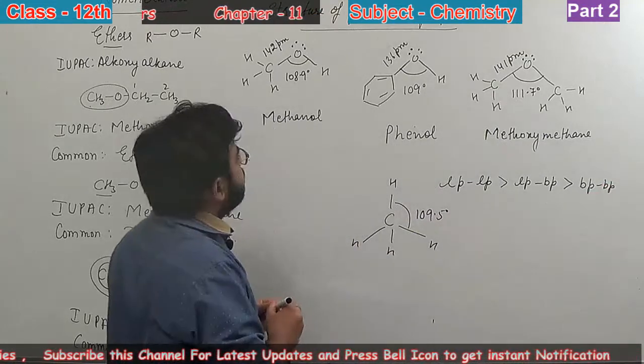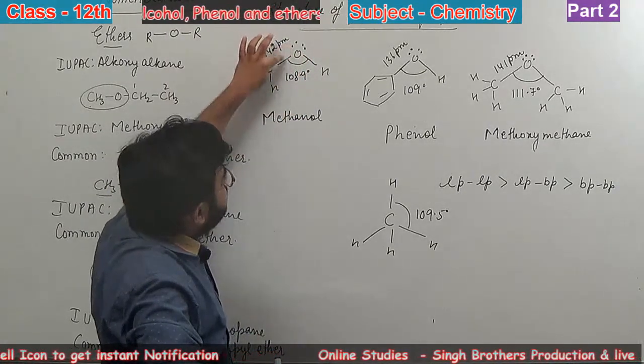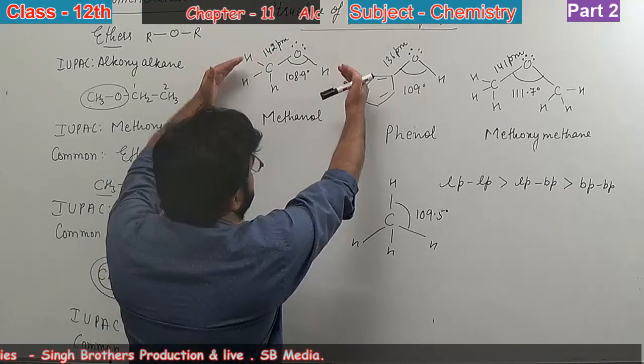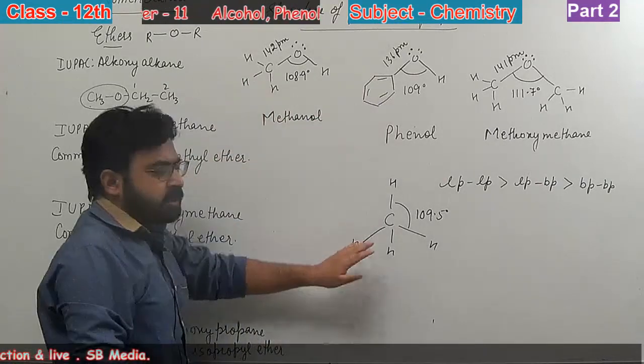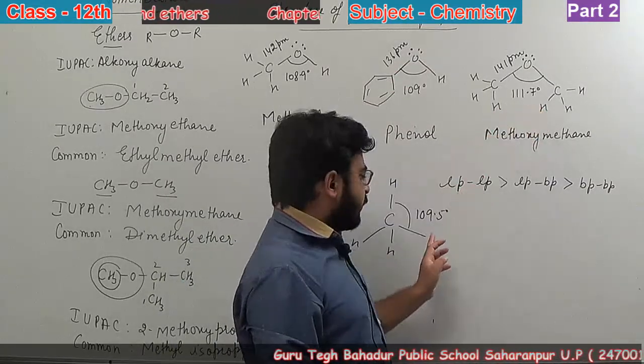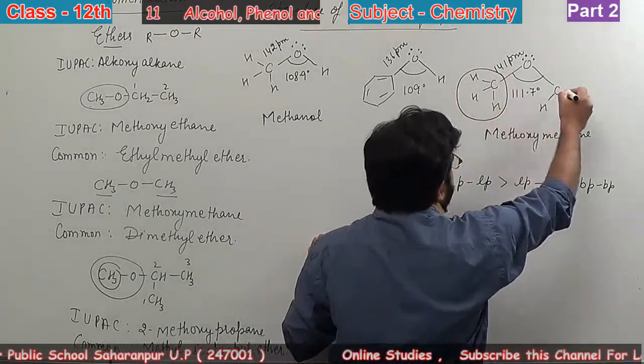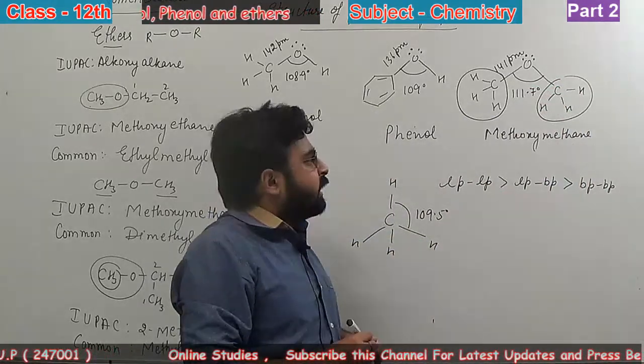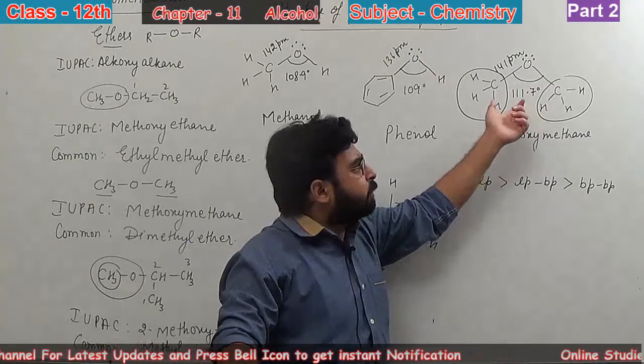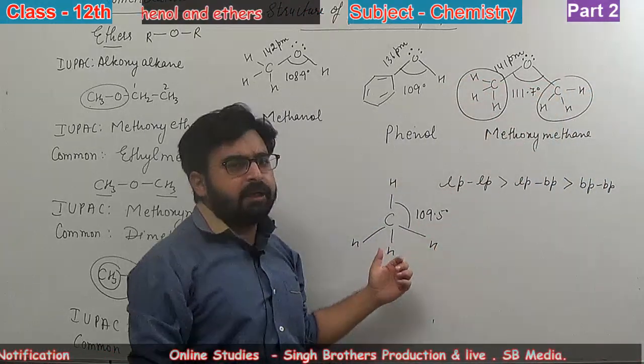Looking at bond angles: in OH there are lone pairs, so bond pair-lone pair repulsion causes bent shape. But in ether, the angle is more than tetrahedral. Why? Because here are bulky alkyl groups. There is repulsion between the two bulky alkyl groups connected with oxygen. Due to repulsive interaction, the bonds go away from each other, making the angle larger.